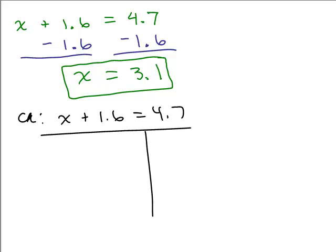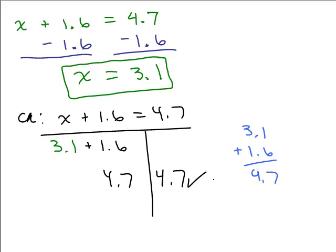So we're going to put in 3.1 for x. And add, and again, you can go over on the side and do your addition. Over here, you could say, well, 3.1 plus 1.6, that's 4.7. So this adds up to 4.7 over here, and the right-hand side is 4.7. So since we've got the same number on both sides, this is the correct answer.